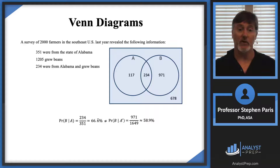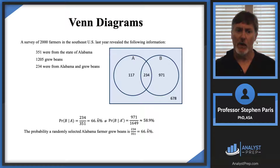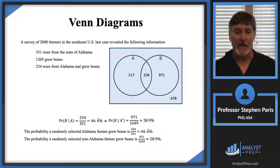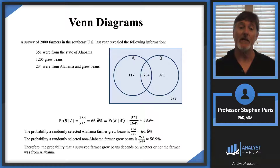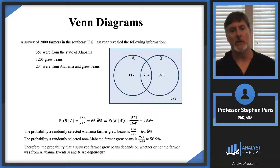And of course, that's not equal to two thirds, which was my first answer. So I get two different values here. The first equation says the probability of a randomly selected Alabama farmer growing beans is two thirds. The second one says the probability that a randomly selected non-Alabama farmer growing beans is 58.9%. So therefore, the probability that a surveyed farmer grows beans depends on whether or not the farmer was from Alabama. In that case, we would say that event A — the surveyed farmer is from Alabama — and event B — the surveyed farmer grows beans — are dependent. Because the probability that a farmer grows beans differs depending on whether the farmer is from Alabama or not.